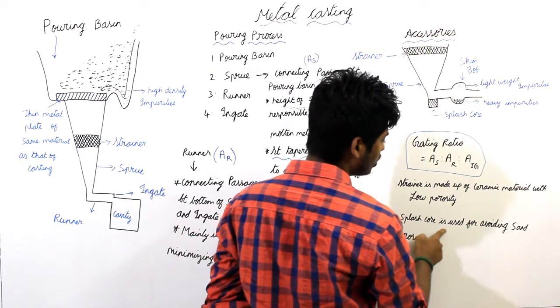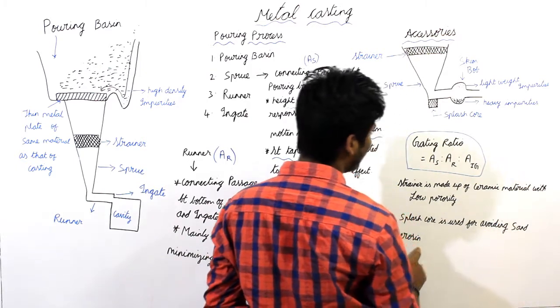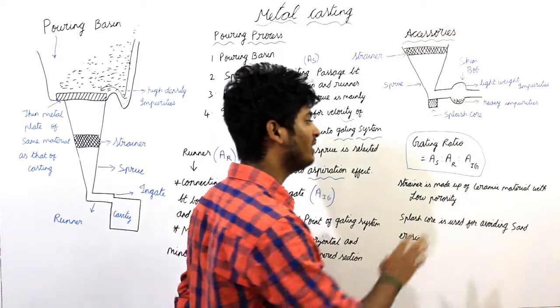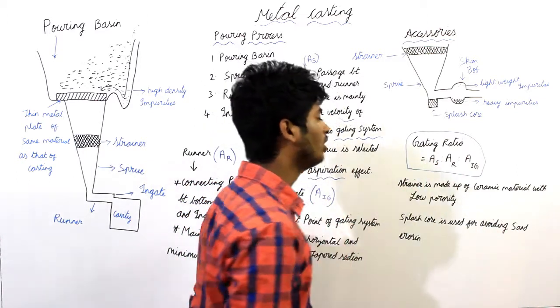Splash core is used for avoiding sand erosion. And the splash core is also made up of same ceramic material with low porosity.